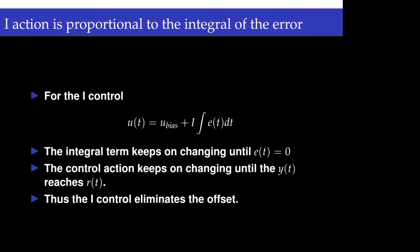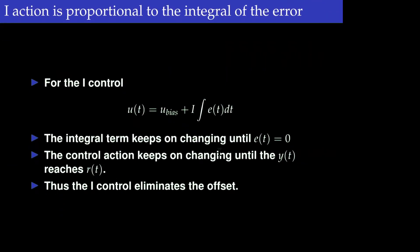For integral control, the control action is dependent on the integral of the error term. If we look at a particular time t_k, integrating the error over time from zero to t_k gives the integral control action. We also need a bias term, representing the null value — the control action at the initial steady state.